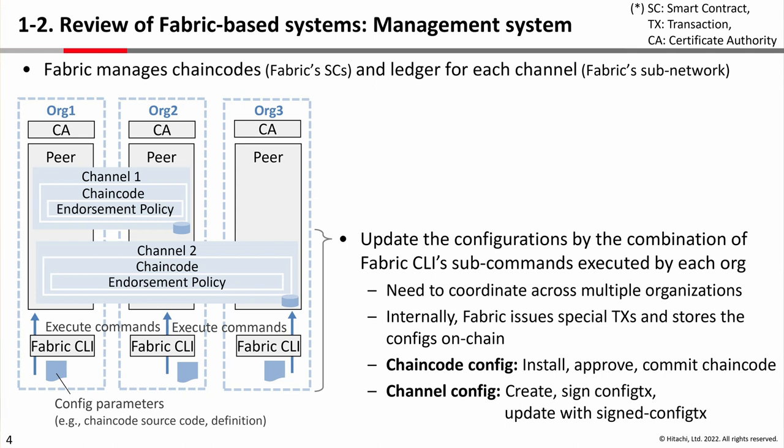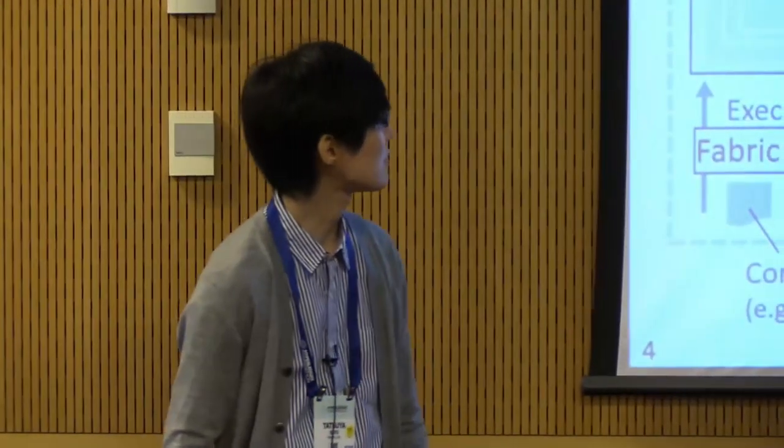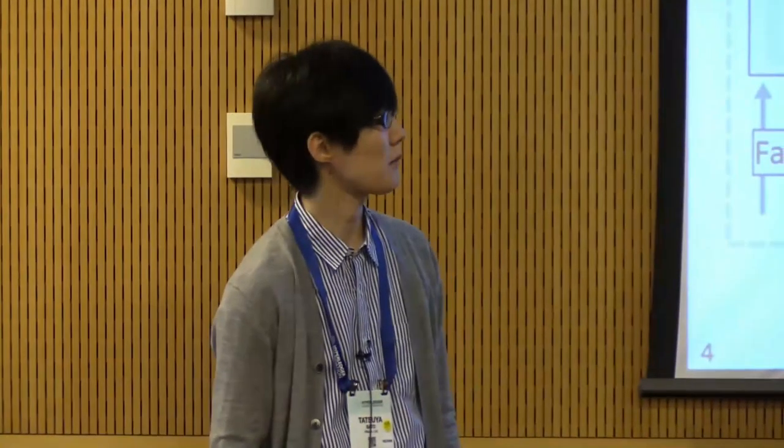Next, let's explain the management side of a fabric-based system. Fabric manages chain code, which is fabric's smart contract, and the ledger for each channel, which is fabric's subnetwork. Fabric can update the configuration by the combination of fabric-CLI subcommands executed by each organization. It needs to coordinate across multiple organizations with config parameters like chain code definition. So typically, fabric issues special transactions and stores the configuration on chain.